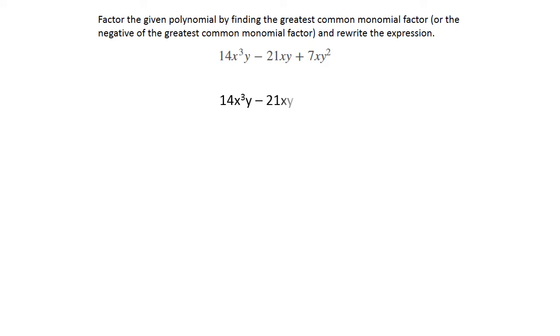First, let's look at what we have. You want to look at the numeric parts of all of these terms and decide what goes into all three of those numbers. They all look like 7 goes into them, and that is true. So all of them divide by 7, which means we're going to be taking that 7 out.